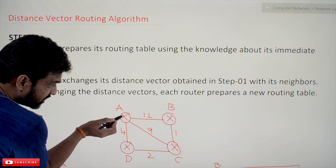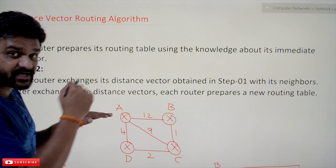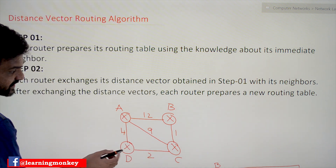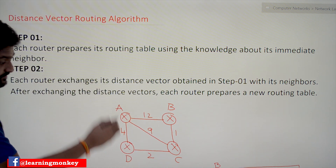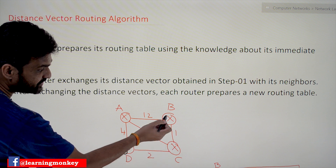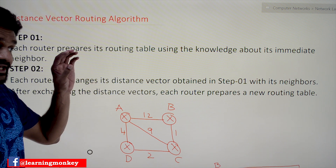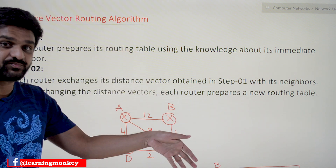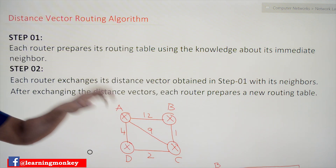For example, what are the immediate routers to router A? Immediate routers means which routers are directly connected to router A. The immediate routers for A are B, C, and D. For D, the immediate routers are A and C — B is not directly connected to D. For C, it is B, A, and D. For B, it is C and A — D is not directly connected to B. Based upon that immediate-neighbor knowledge, the routing table will get first updated.